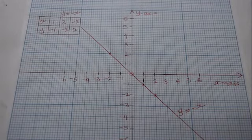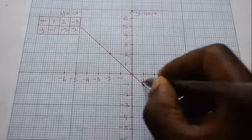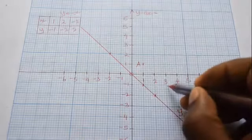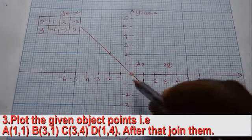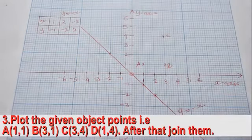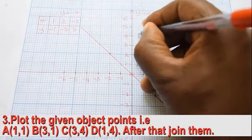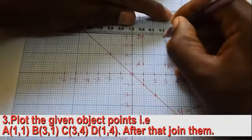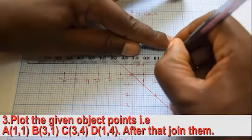Then, plot the object points on the same graph paper. Check all points are well plotted, then join them to form the object shape.